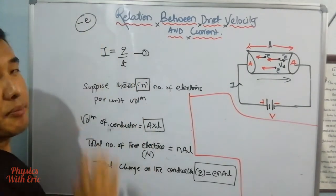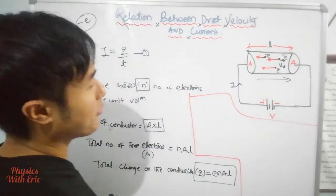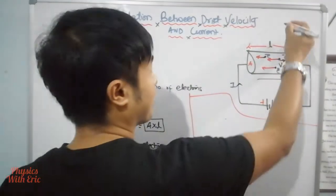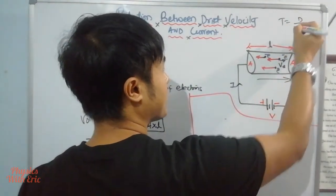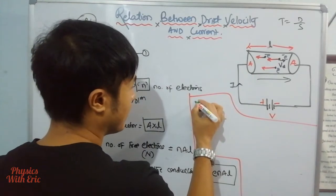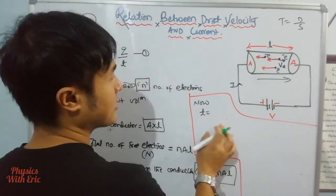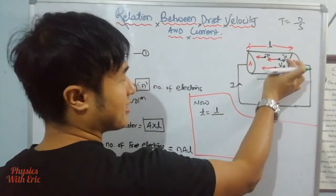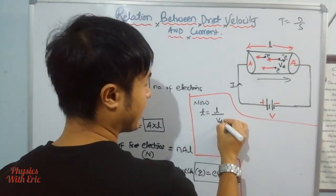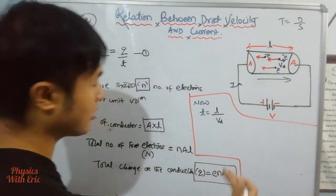Now for time: time equals distance by speed. Time equals L divided by Vd, where Vd is the drift velocity.